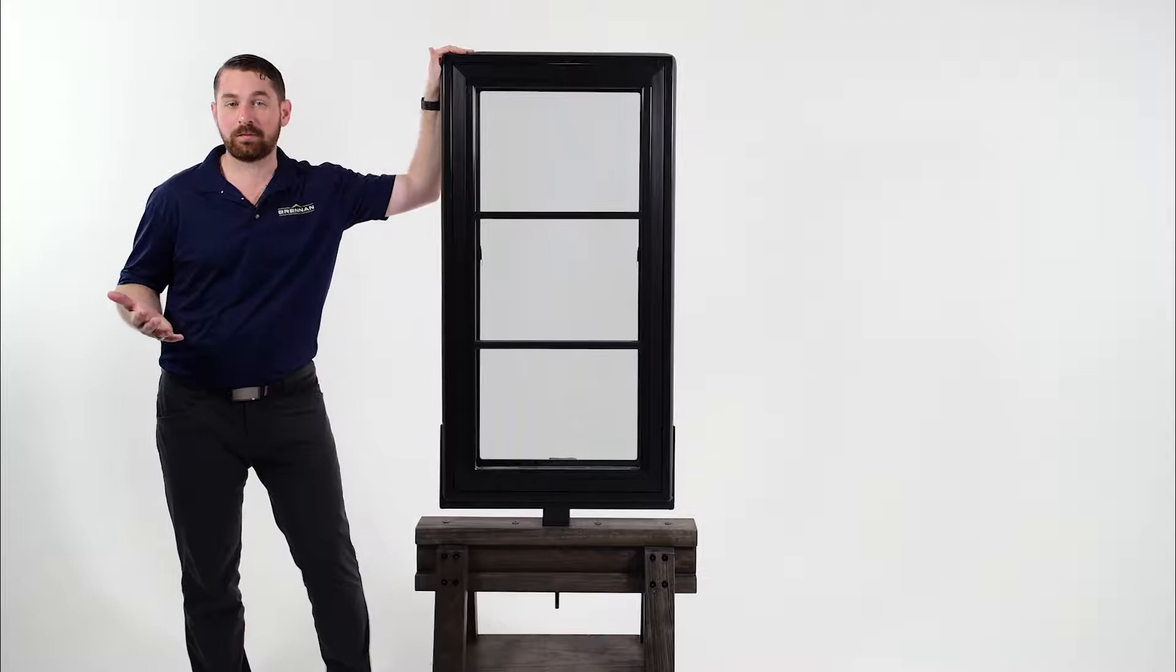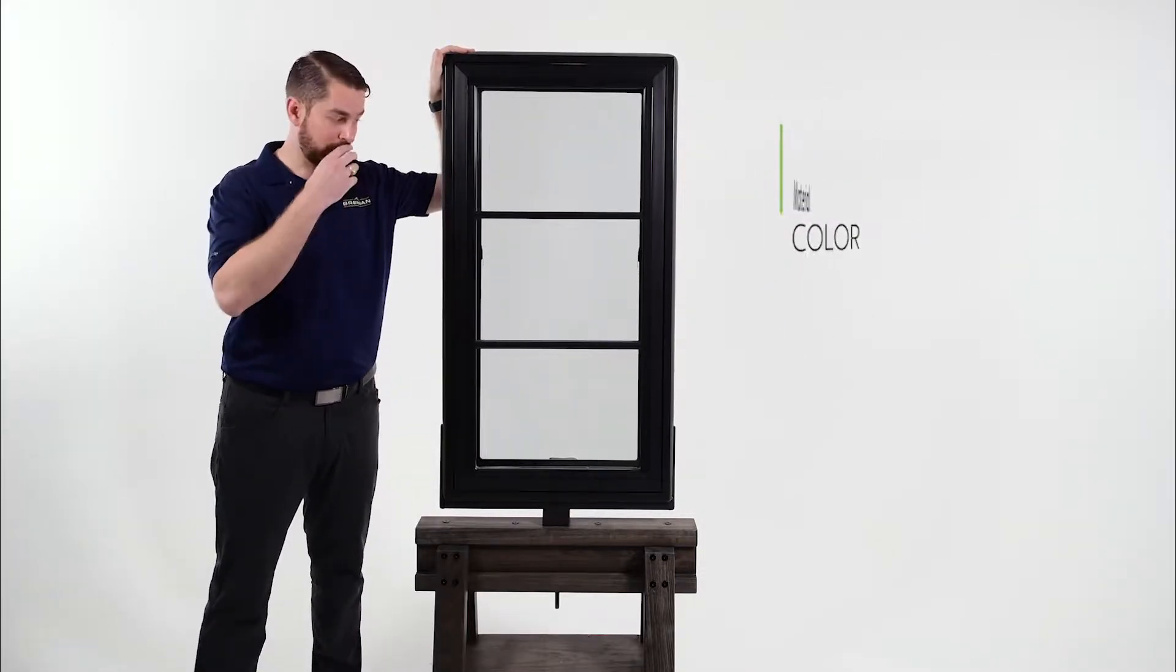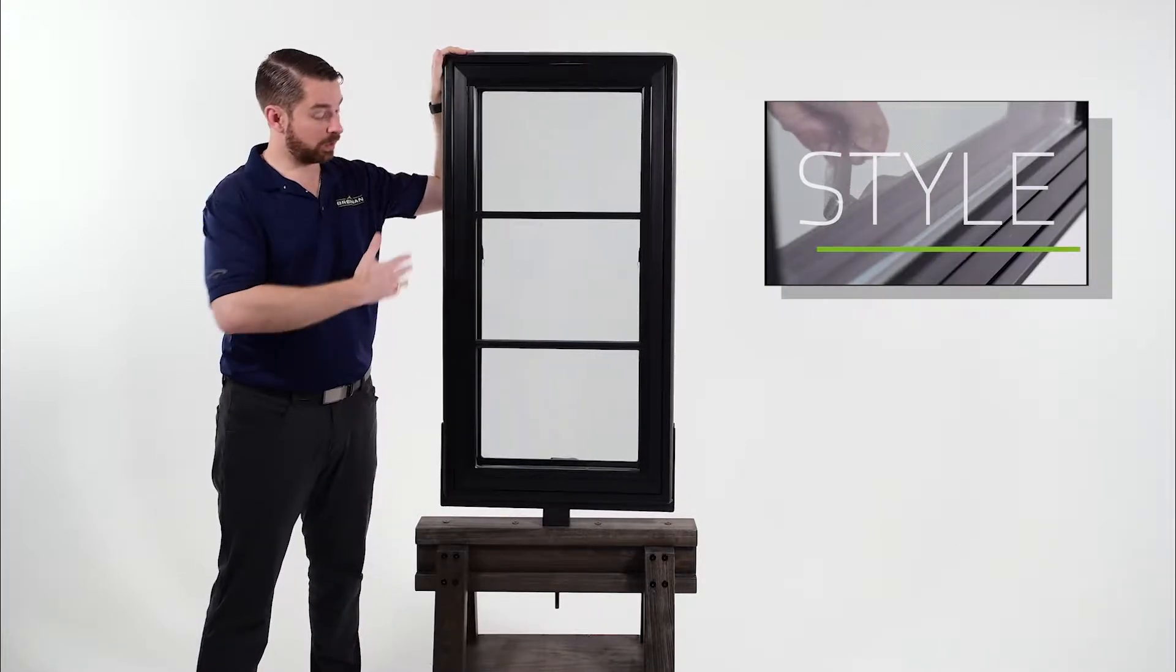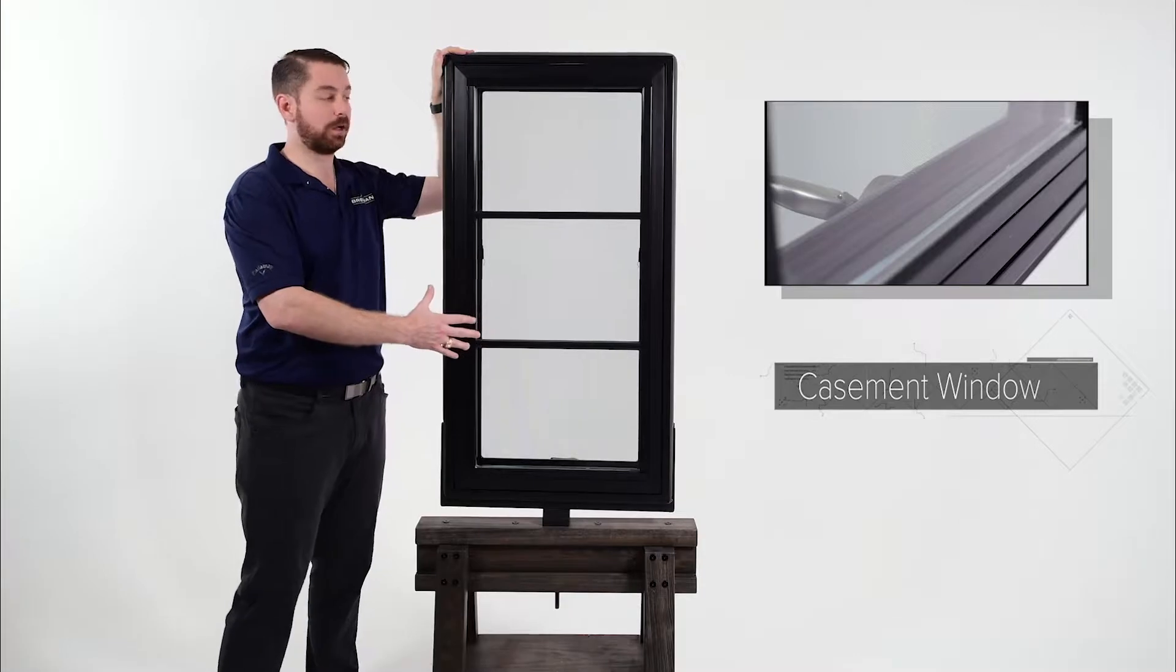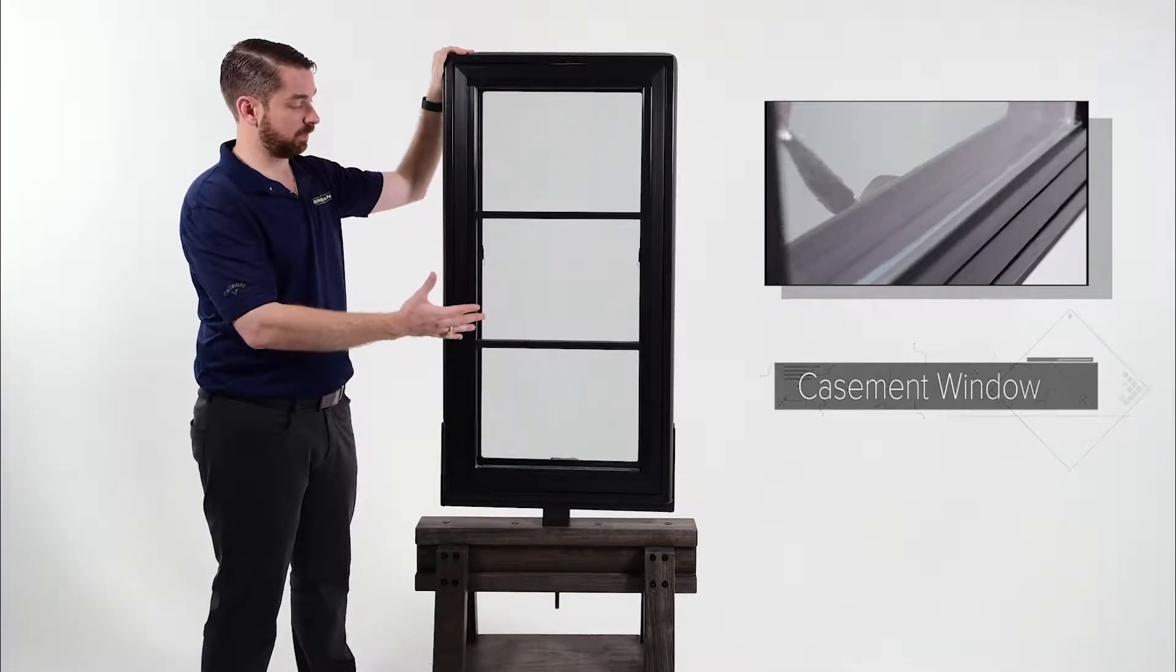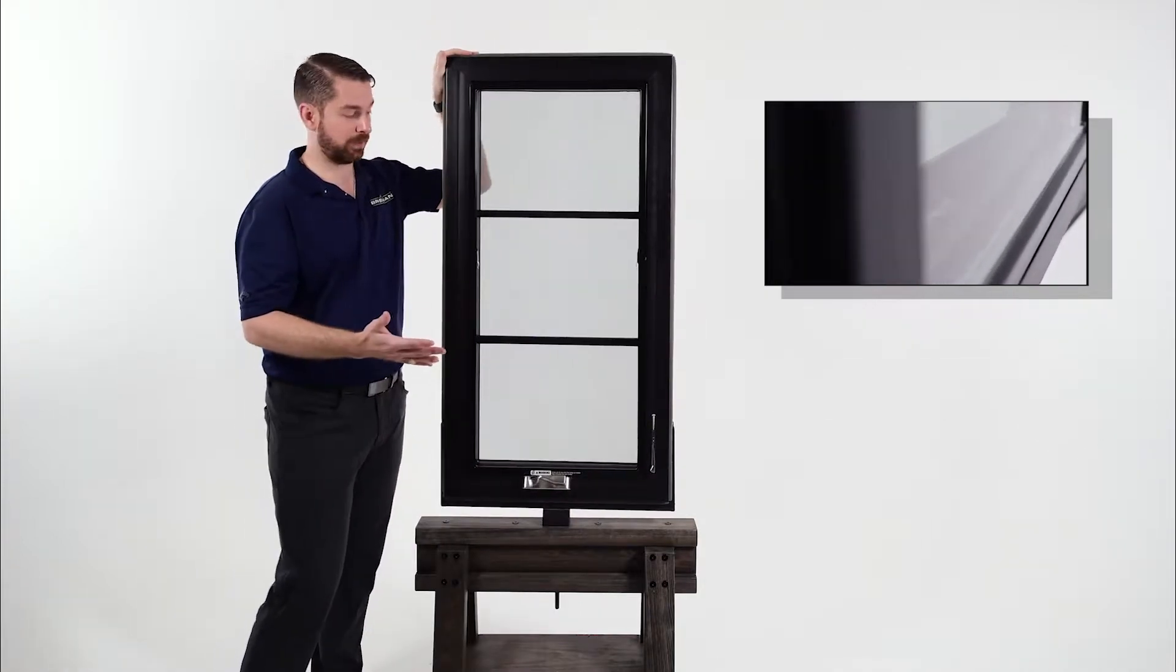So today we'll be covering three parts: style, material, and color. So let's start with style. This is the 100 series casement window. This is the exterior profile or the view you'd see on the exterior of your home. This is the interior profile.